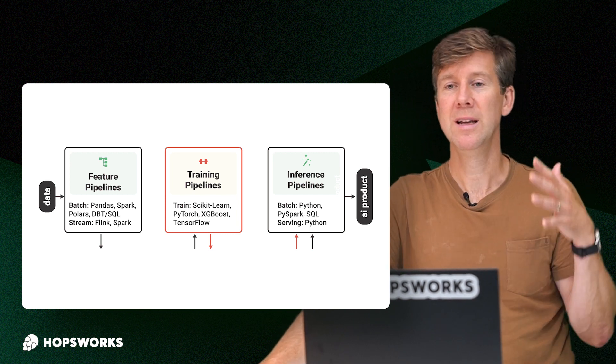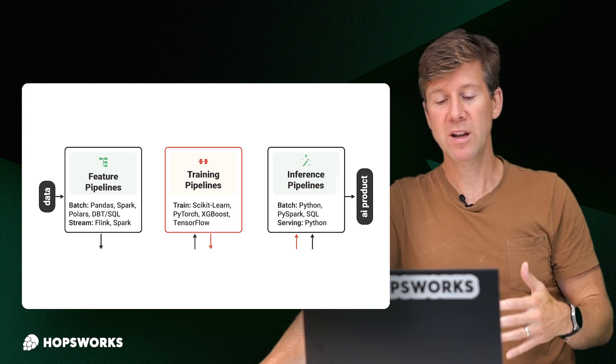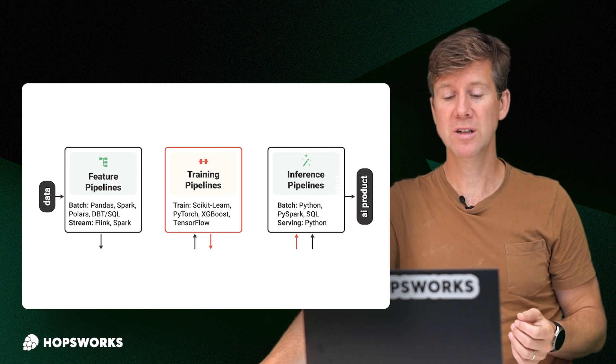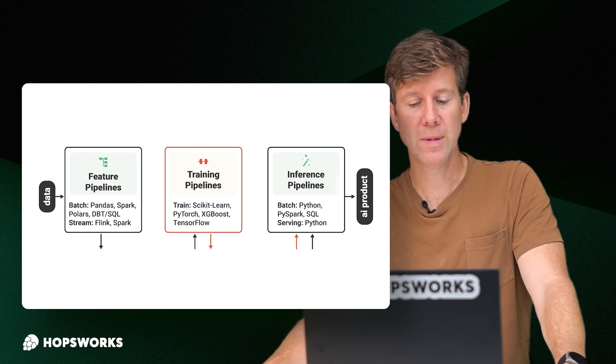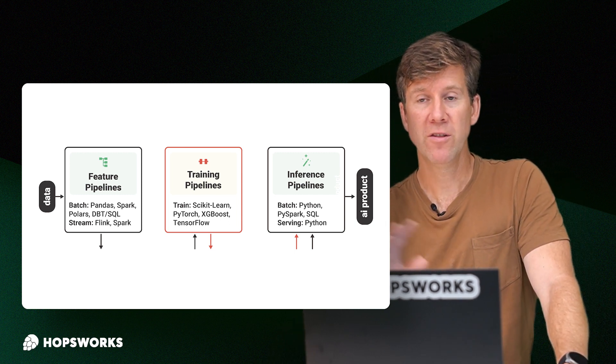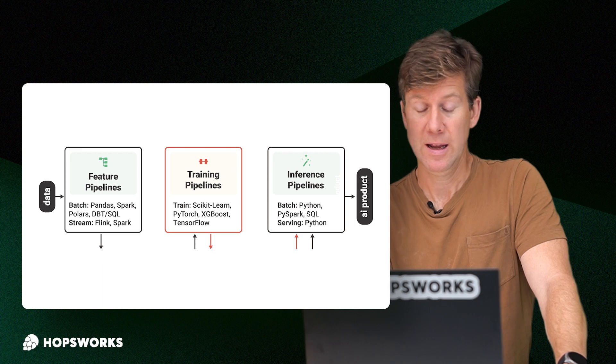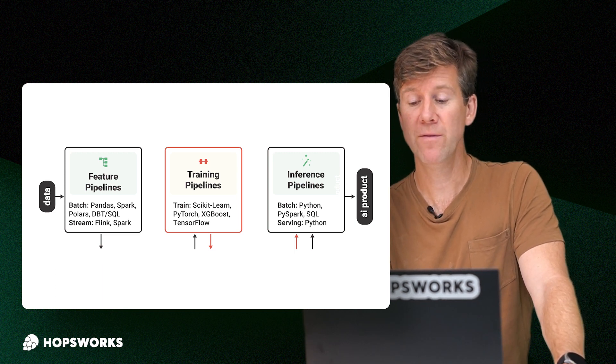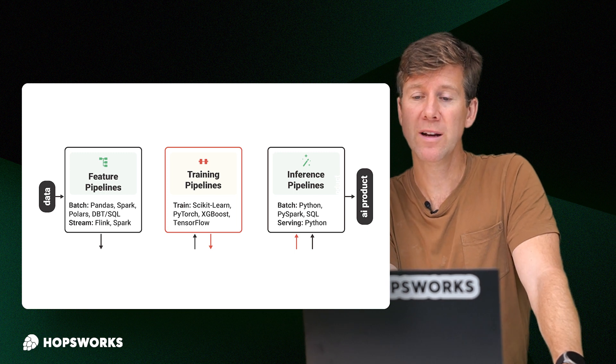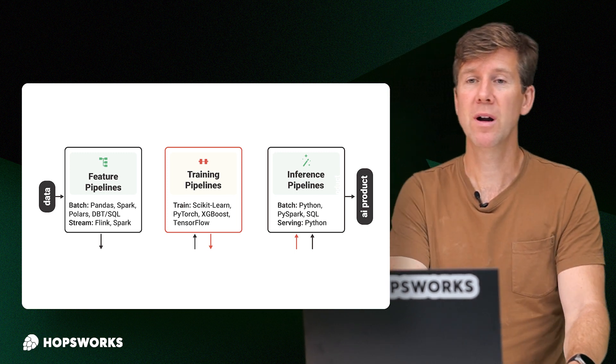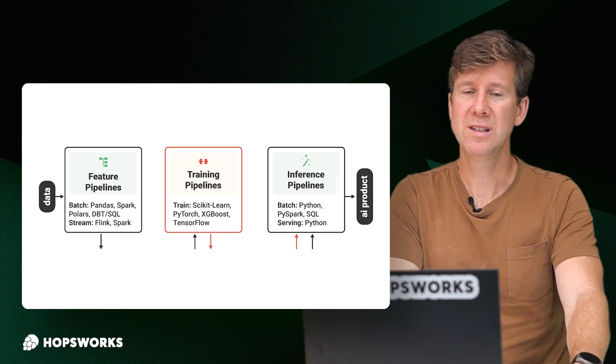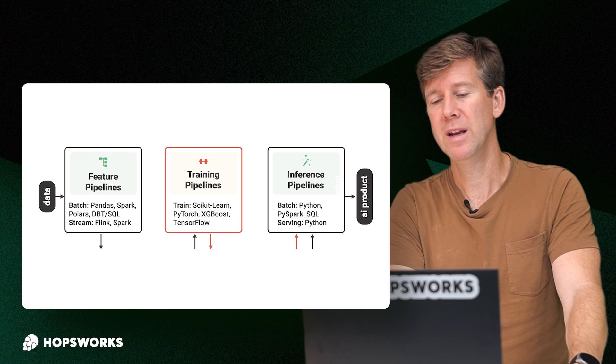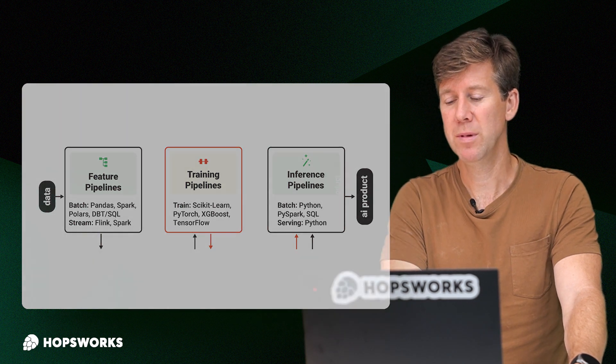Here we can see that the feature pipeline can be implemented in batch. So pandas, if you're small data, maybe Spark with large data, it can be streaming with Flink or Spark Streaming. Training pipelines, you've many different machine learning pipelines in Python. So scikit-learn, PyTorch. And in inference pipelines, if it's a batch system with small data, Python might be fine. If you have big data, PySpark. In online machine learning systems, typically it's Python because the models are typically trained in Python. So your online inference or serving environment will typically be Python.